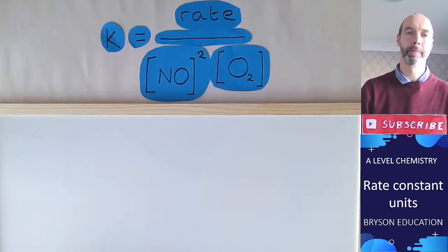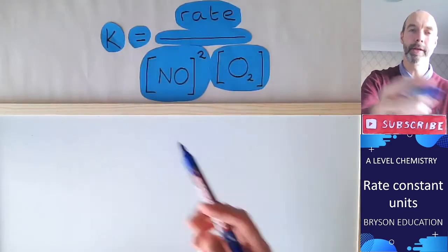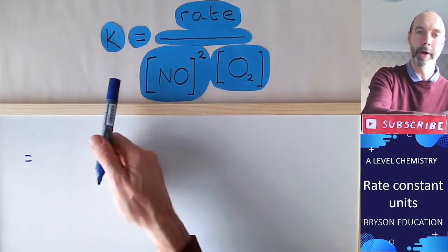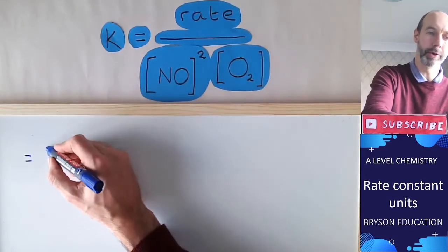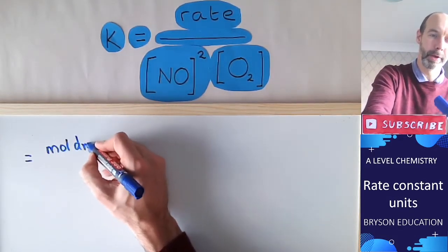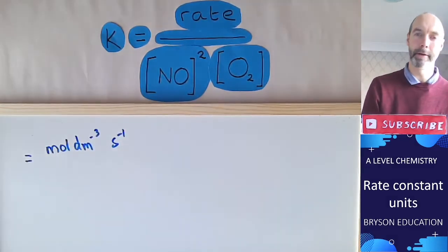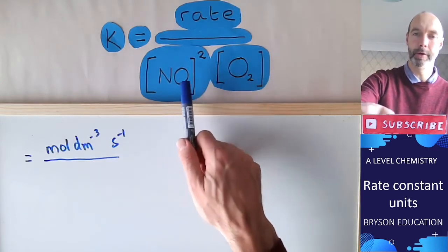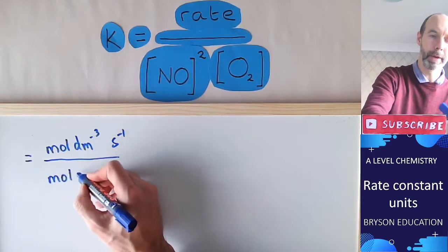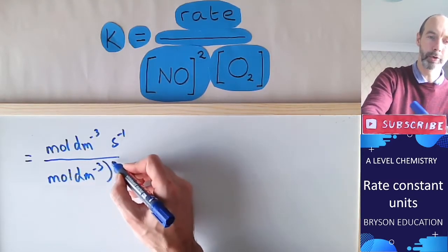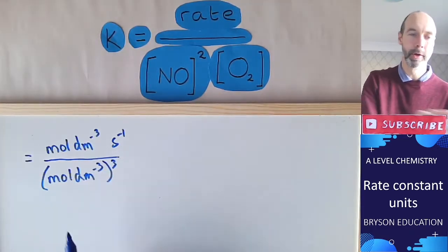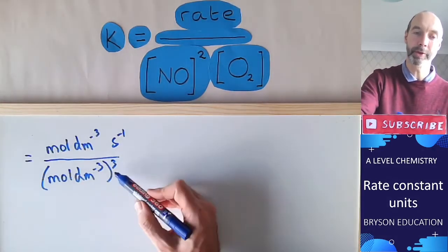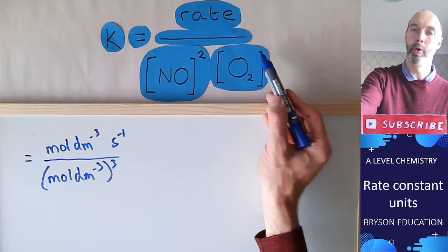How do we do that? The problem when we're determining the units for the rate constant is that they're different each time. How do we work this out? We're going to use the rate equation still. The units of rate across the top are moles per decimeter cubed per second, and that's divided by concentration squared multiplied by concentration. Concentration squared multiplied by concentration is concentration to the power of three, or concentration cubed. The bottom line will always be measured in moles per decimeter cubed to the power of something, and that something is the total order: two plus one, in this case three.